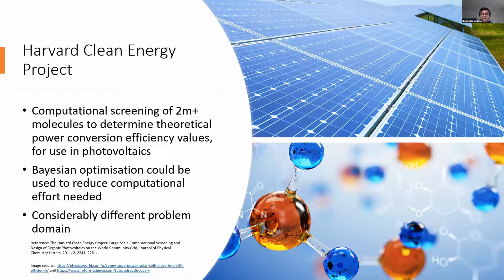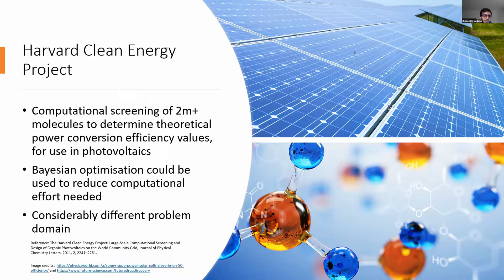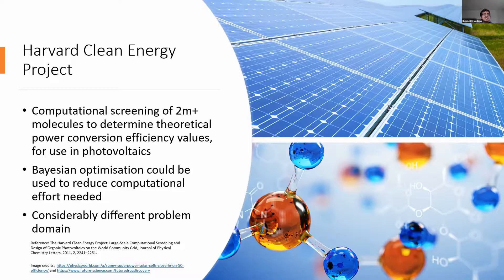The second application was the Harvard Clean Energy Project, a large undertaking computationally screening around 2 million molecules for use in organic photovoltaics — essentially checking whether chemicals could be used in solar panels. Our idea was to use this as a training set and see if the EDVO optimizer could identify molecules with better power conversion efficiency values without having to brute-force search all 2 million candidates using Bayesian optimization.